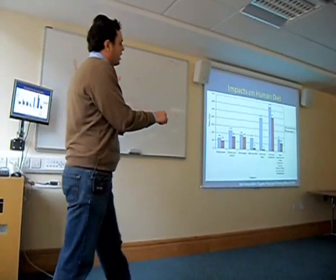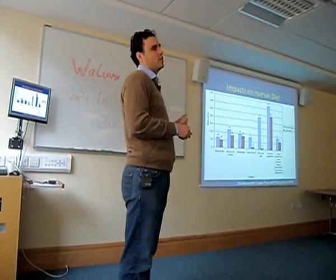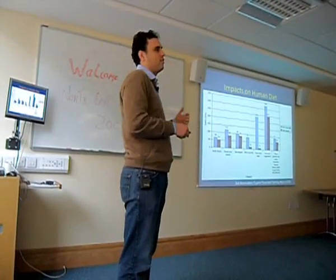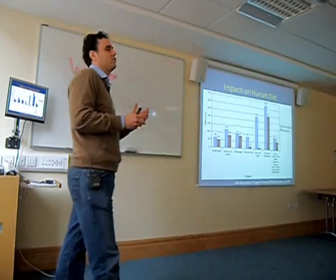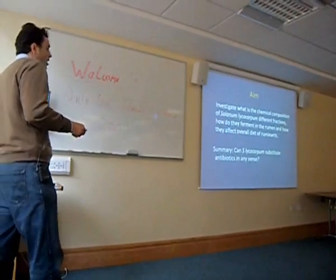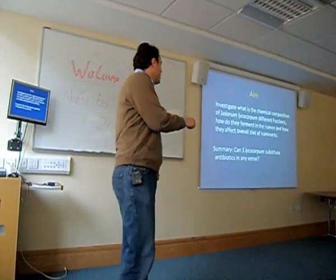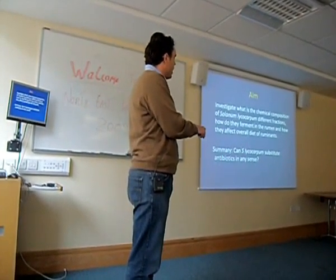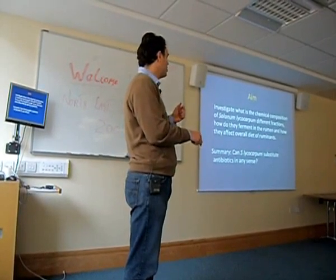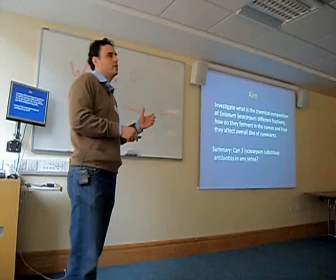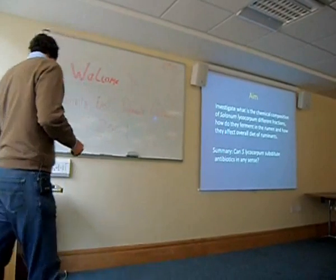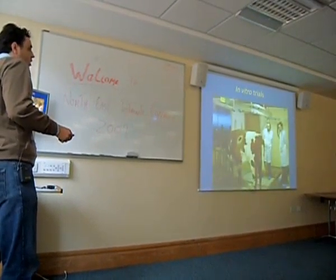This graph shows the need for organic products. When we use natural antibiotics for animals, we have another kind of tool to help produce organic foods. The summary of the research is: how can a special wild plant shrub called Solanum lycocarpum substitute antibiotics? What are the effects when you use this plant in this ecosystem?